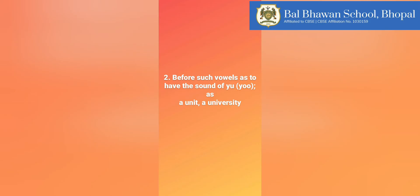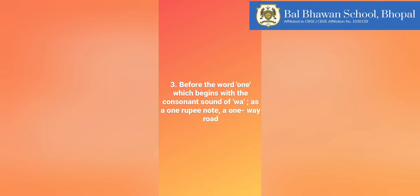We also use 'a' before the word 'one', which begins with the consonant sound of 'w'. For example: a one rupee note, a one-way road, a one-eyed man.